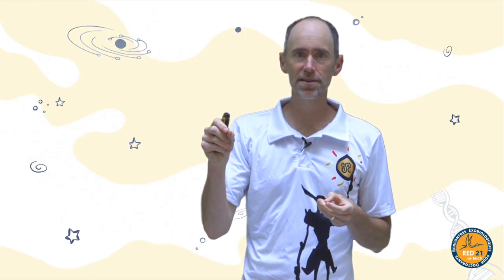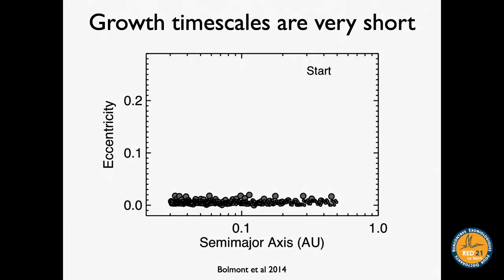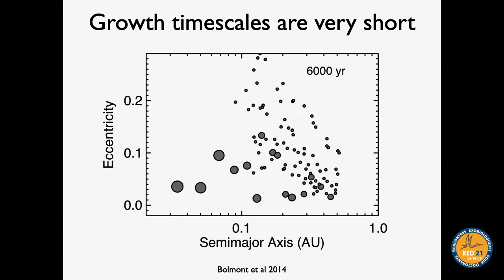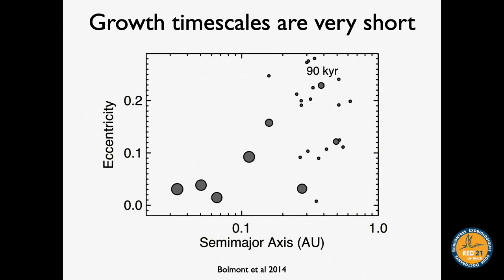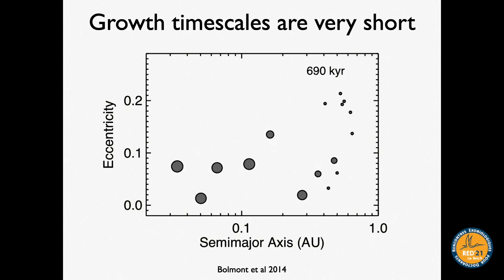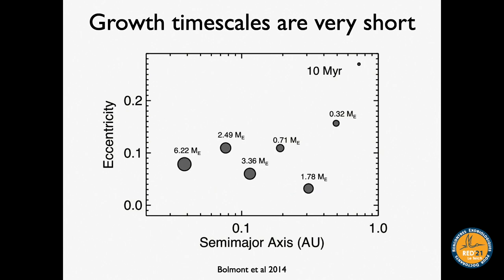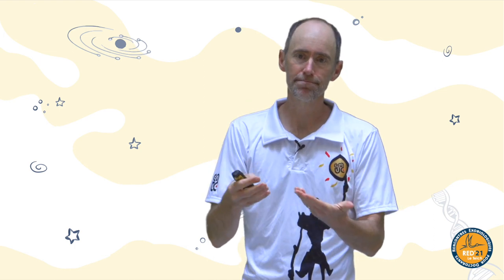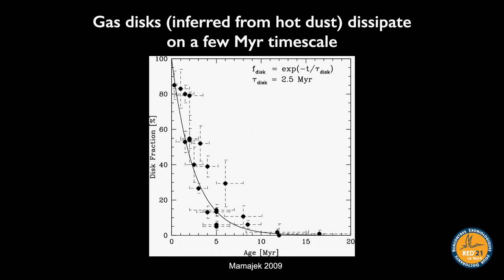We know that growth timescales very close in are very short. This animation shows a population of rocky material placed close to a star, tracking eccentricity on the y-axis and orbital radius on the x-axis. Things sweep into each other and bash together — within a few thousand years planets very close in are basically fully grown, and within about a hundred thousand years planet formation is essentially over, producing planets of a few Earth masses.